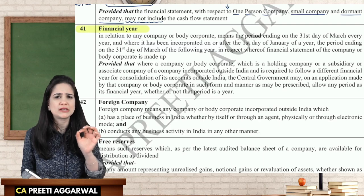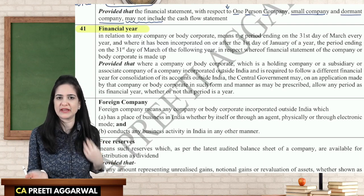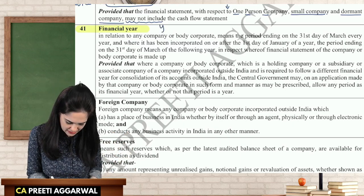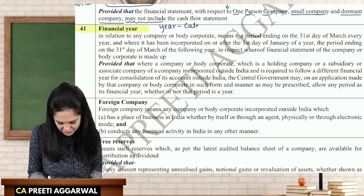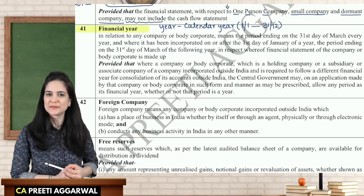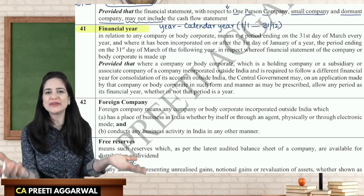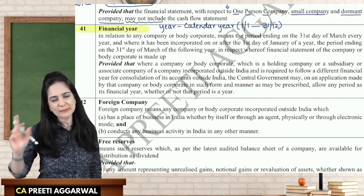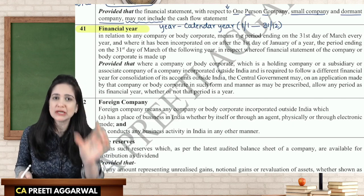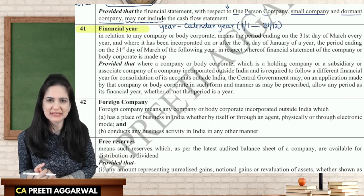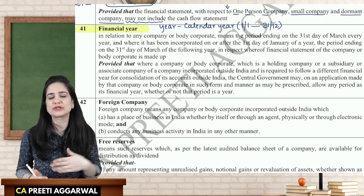Whenever the word 'year' is used, it generally means calendar year — we follow the British calendar year, which begins from 1st January to 31st December. When you wish your friend 'Happy New Year' on 1st January, that is the calendar year. Whenever I use the word 'financial year,' it begins on 1st April and ends on 31st March.